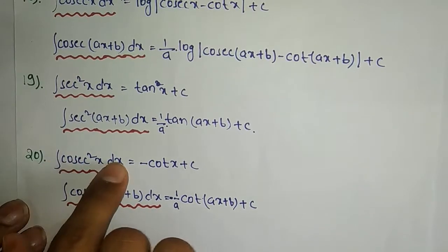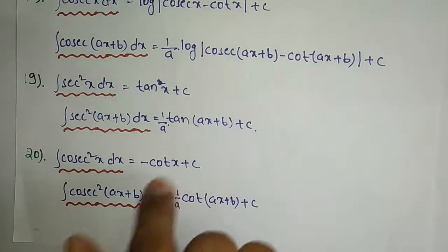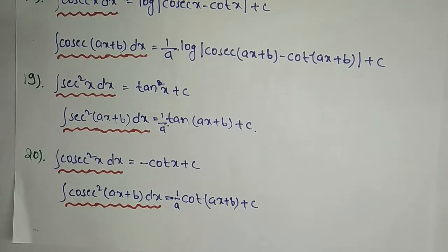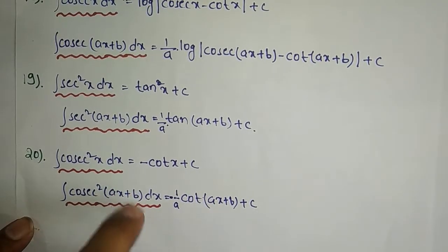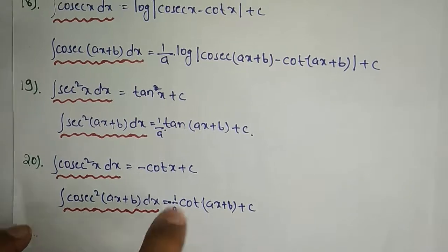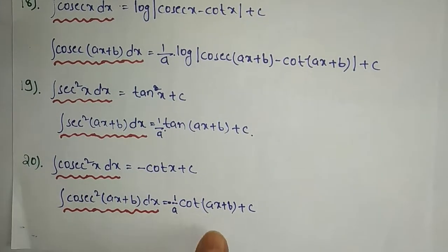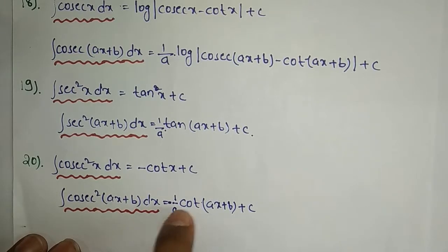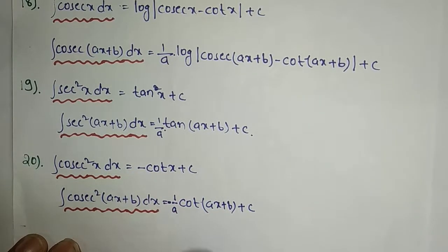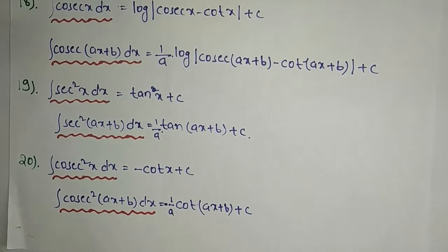The 20th formula: integration of cosec²x dx equals minus cotx plus C. For cosec²(ax+b) dx, the inner derivation gives a in the denominator: result is minus 1/a · cot(ax+b) plus C.